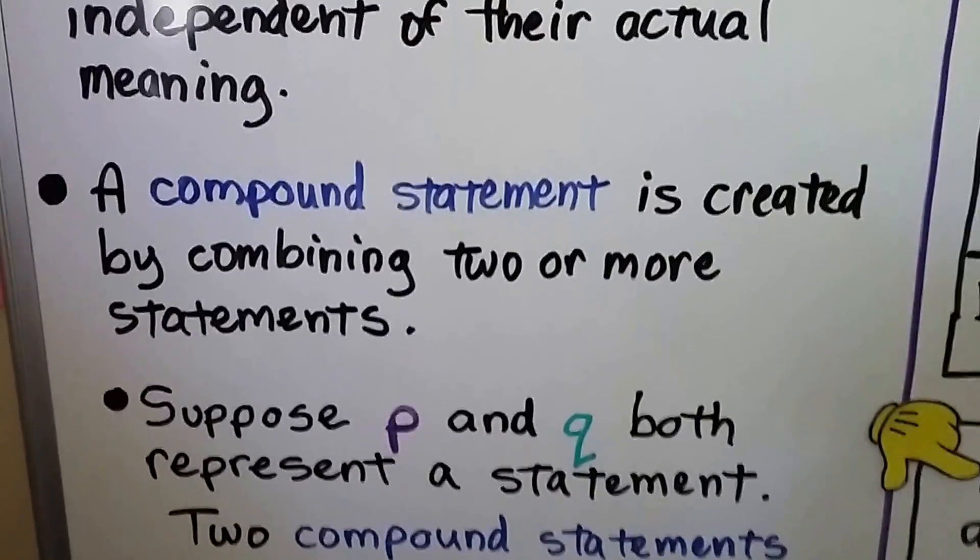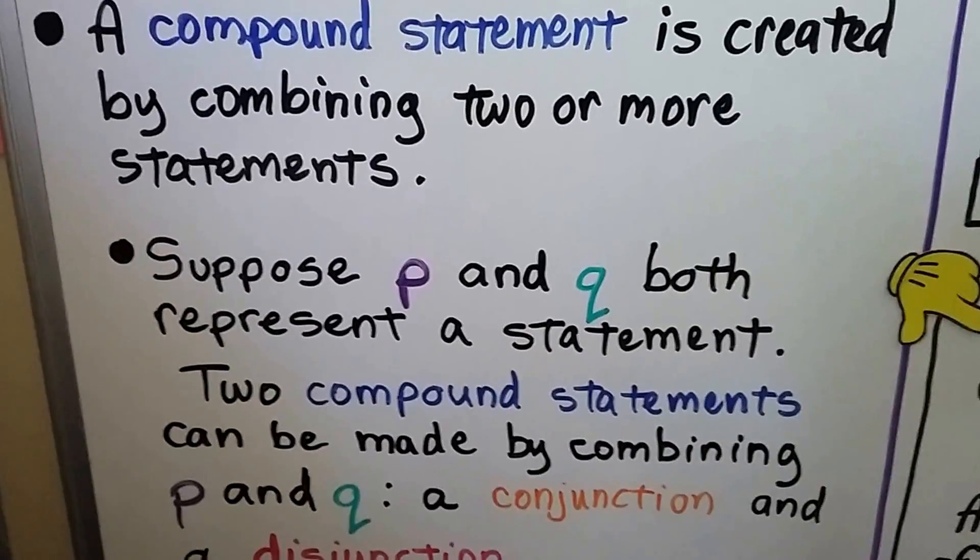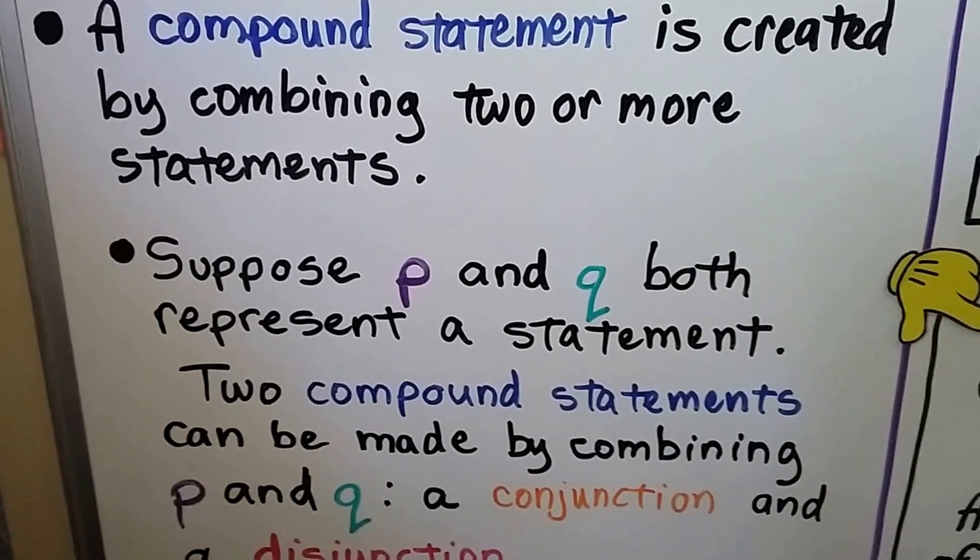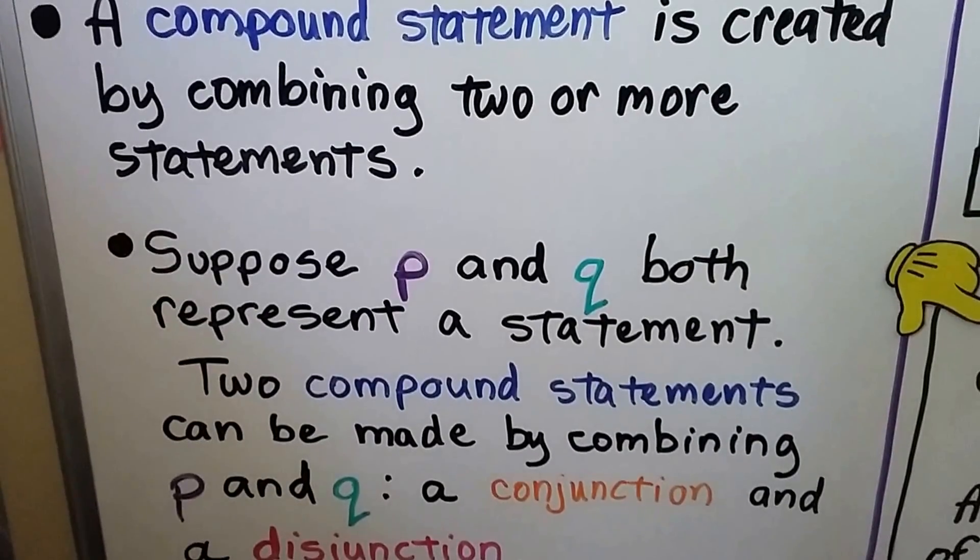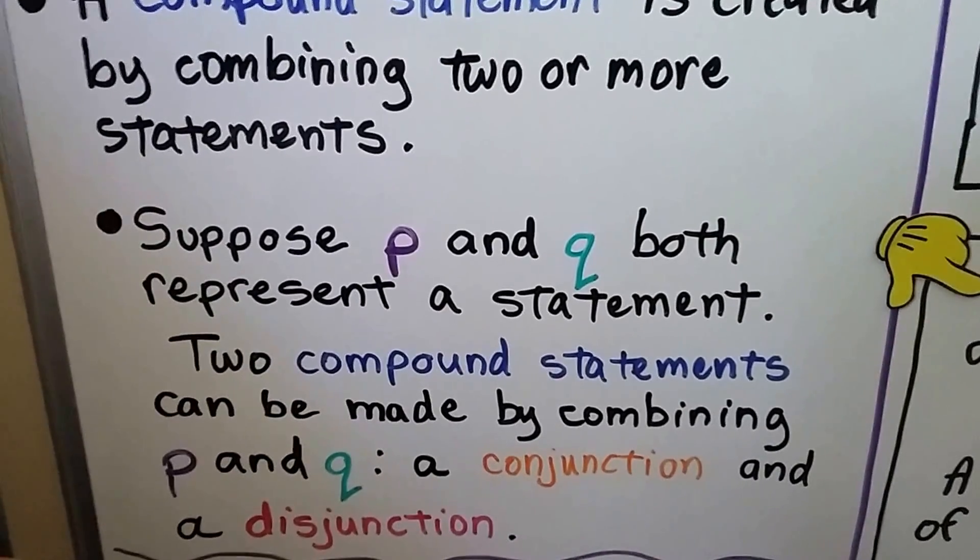A compound statement is created by combining two or more statements. Suppose P and Q both represent a statement. Two compound statements can be made by combining P and Q: a conjunction and a disjunction.